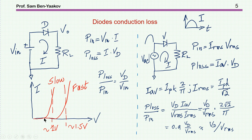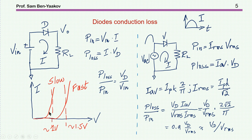Diodes have a characteristic relationship between current and voltage, and it really depends on the type of diode. Slow diodes, compatible with line rectification requirements, have a relatively low forward voltage — the average could be about 1 volt. A fast diode, on the high-frequency side, will have an average of about 1.5 volts. Assuming a constant voltage drop, the ratio between the loss and input power equals the ratio between the diode voltage drop and the input voltage.